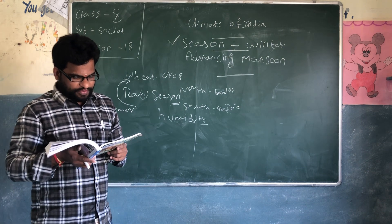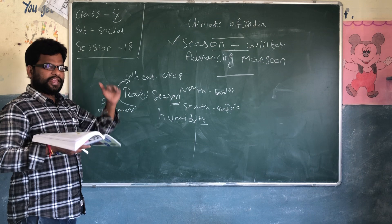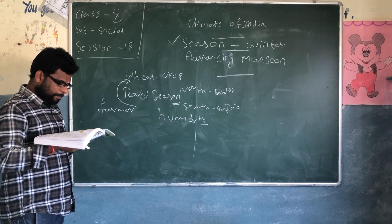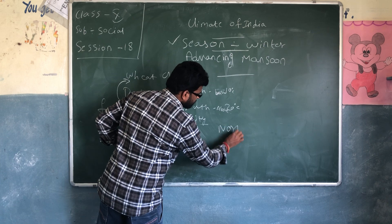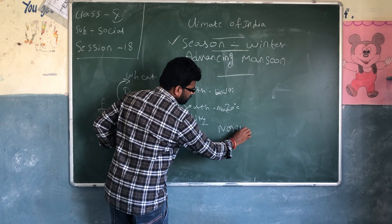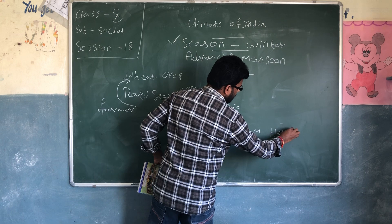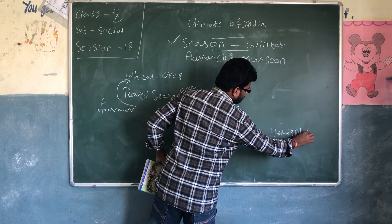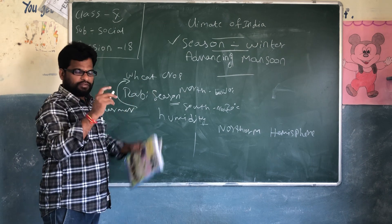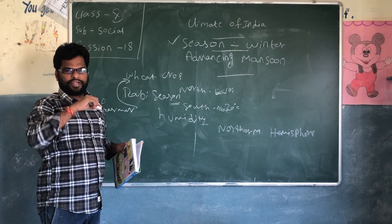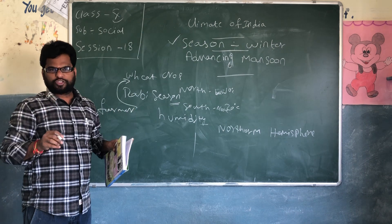India lies in the trade wind belt of the Northern Hemisphere. India is situated between the trade winds of the Northern Hemisphere. Once we complete the Climate of India chapter, I will show you the maps and everything.